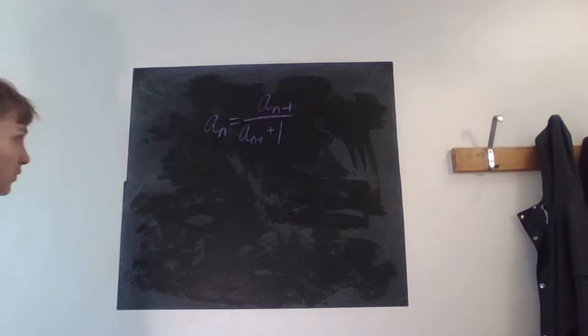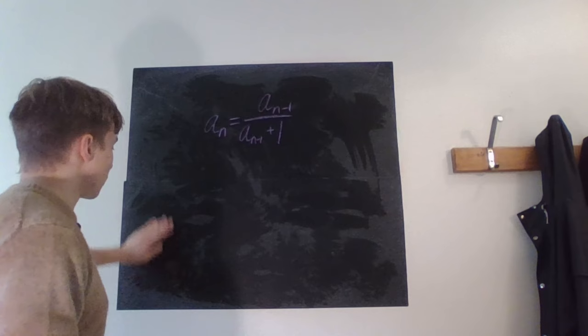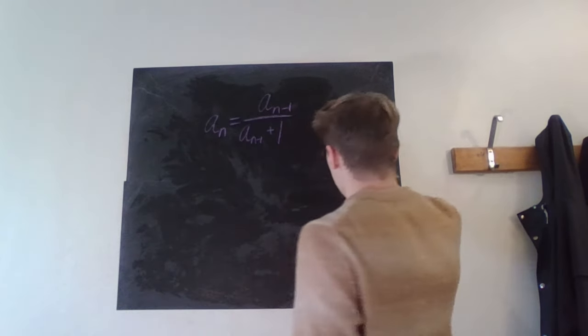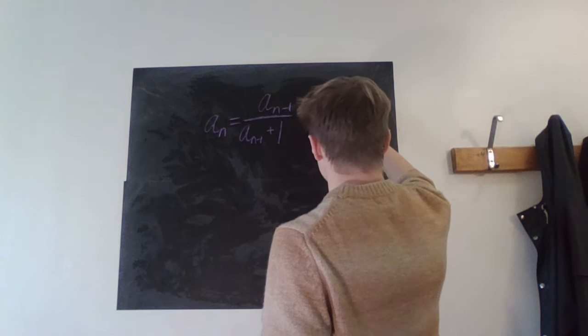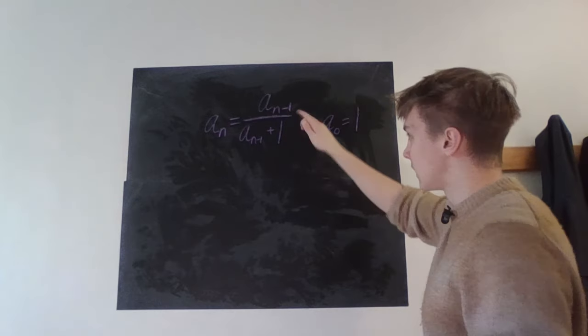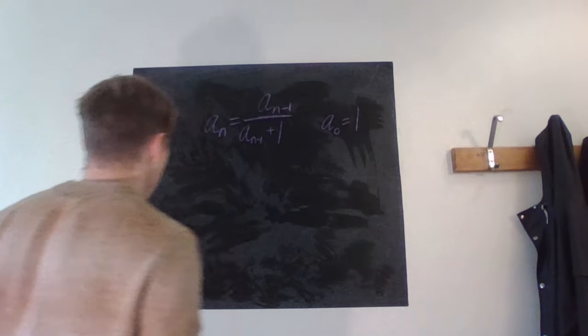And we are supposed to find an explicit formula. Also given that a_0 equals one, because if it's equal to zero, then it never escapes zero. So a_0 equals one.